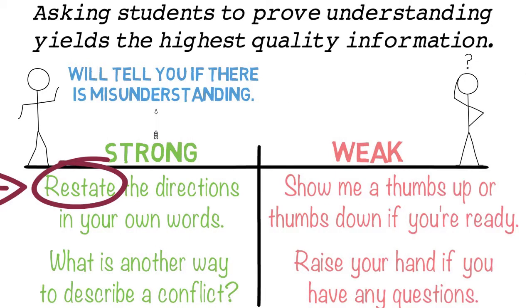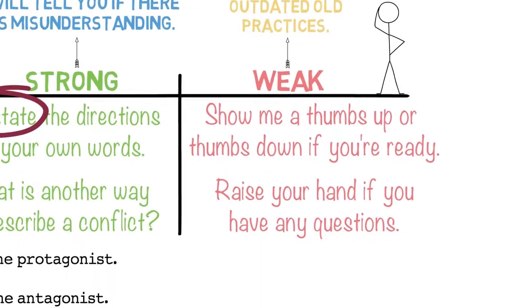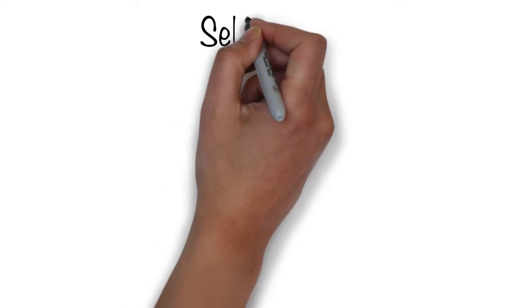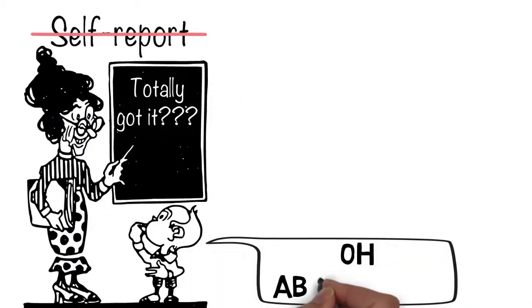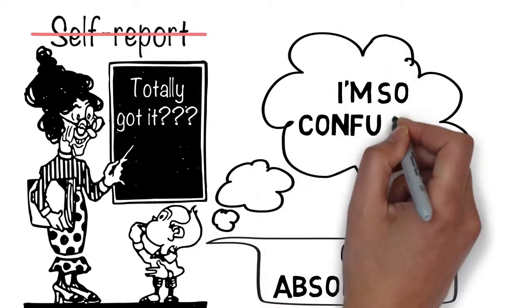But on the right side, these are outdated checks for understanding that can often give us false positives. If we ask our students to self-report, to tell us if they understand without having to prove that they understand, we have a hard time knowing if the information has truly stuck, or if students are just trying to pretend and get us to move on to someone else.